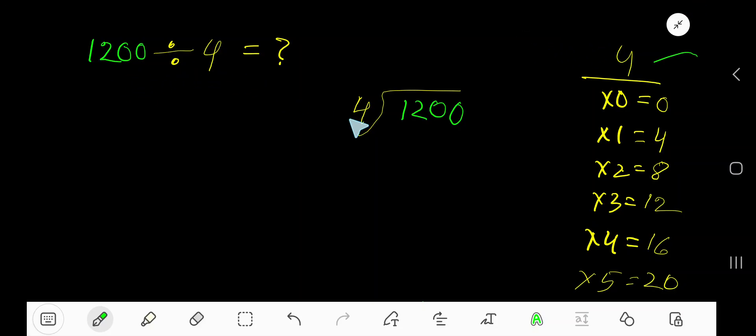1200 divided by 4. Here 4 is the divisor, so we need the multiplication table of 4. 4 times 0 is 0, 4 times 1 is 4, 4 times 2 is 8. To find out the multiplication table of 4, just add 4 with the previous step: 0 plus 4 is 4, 4 plus 4 is 8, 8 plus 4 is 12, 12 plus 4 is 16.